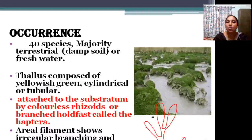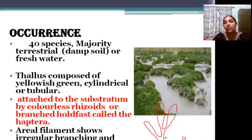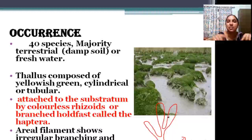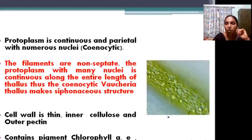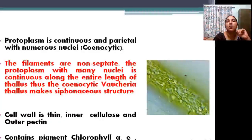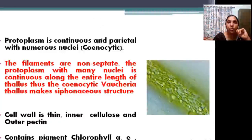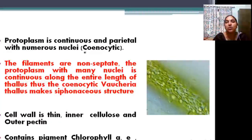The filaments have irregular branching — this is an identifying feature of Vaucheria. The structure is irregularly branched and attached to the substratum by a holdfast. The cell of Vaucheria has protoplasm with numerous nuclei present. This condition of having numerous nuclei is known as coenocytic.